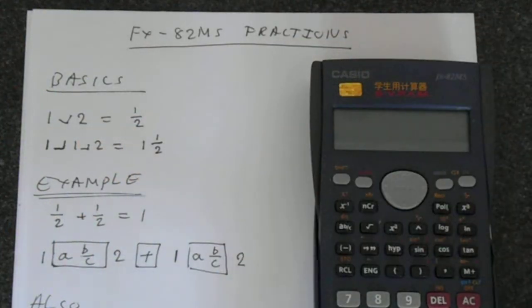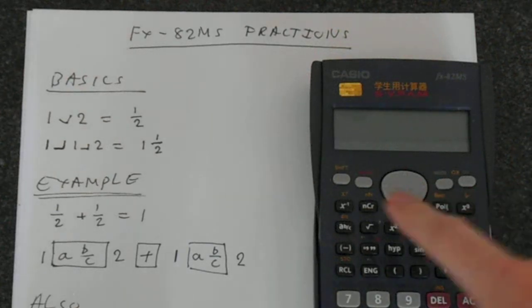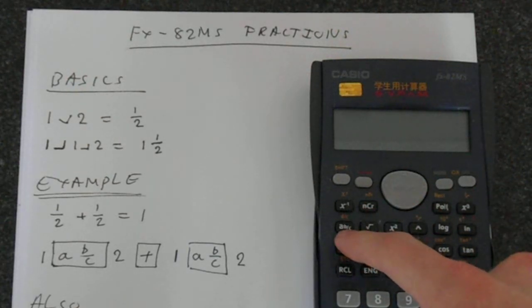Let's do a very simple example: a half plus a half. This is obviously equal to 1. The way you do this on this calculator is to use this button here, the A B over C button.